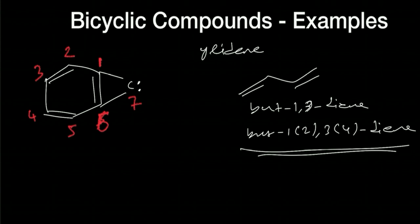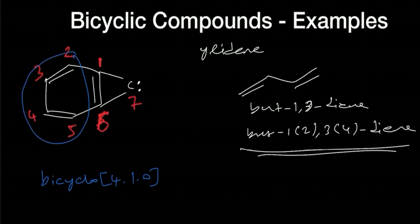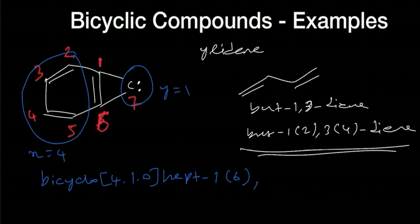So bicyclo, then [4.1.0] — four carbon atoms on the longest pathway, one carbon atom for y, and z is zero because the bridges are directly attached. Then hept-, and then 1(6) for the first double bond, 2 for the second double bond, and 4 for the third double bond — triene. Then 7-ylidene. That is the correct IUPAC name.